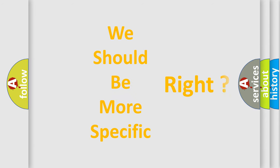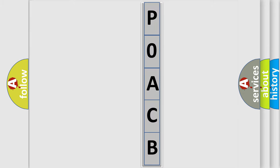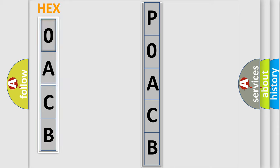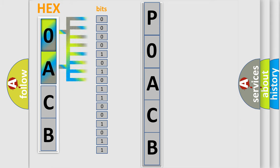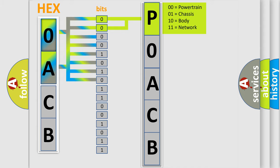The following demonstration will help you look into the world of software for car control units. The error code is split into two bytes consisting of 16 bits. One bit is the basic unit that each computer works with. The bit has two logical states: zero, low level, and one, high level. By combining the first two bits, the basic character of the error code is expressed.